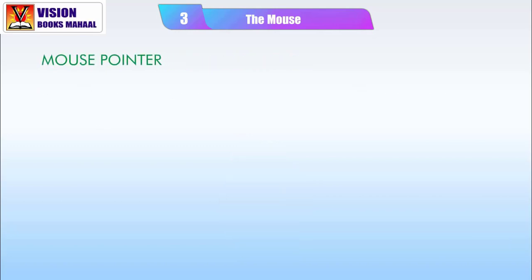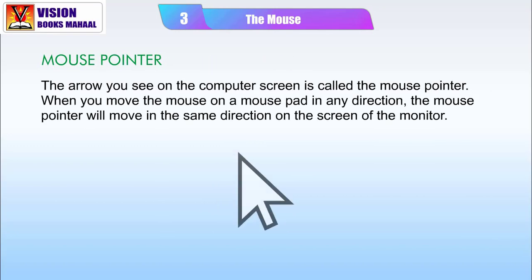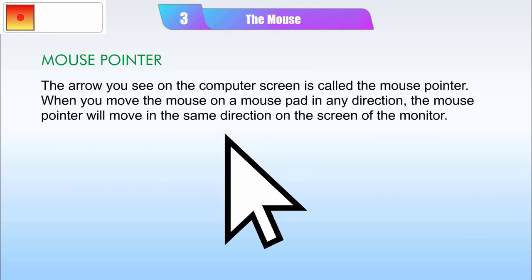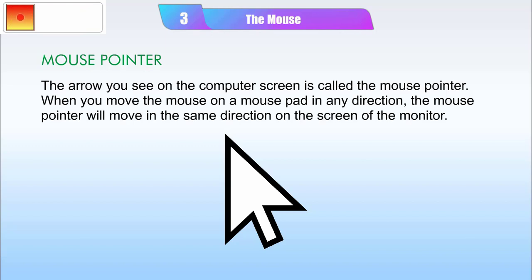Mouse Pointer. The arrow you see on the computer screen is called the Mouse Pointer. When you move the mouse on a mouse pad in any direction, the mouse pointer will move in the same direction on the screen of the monitor.